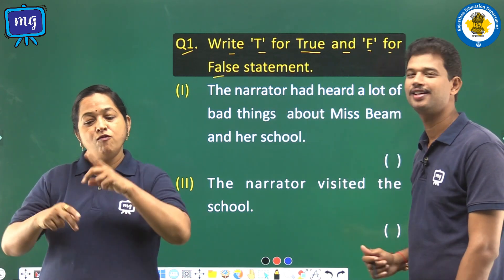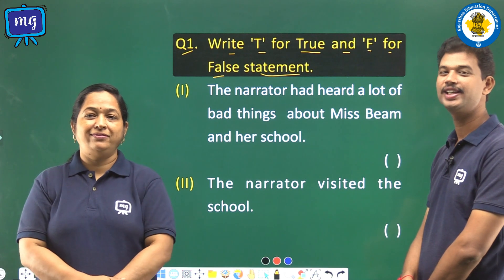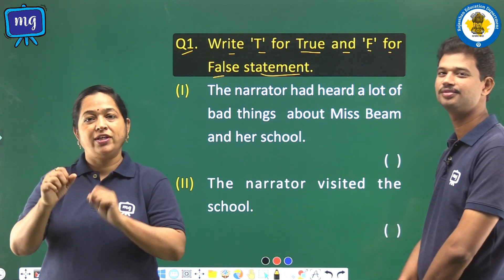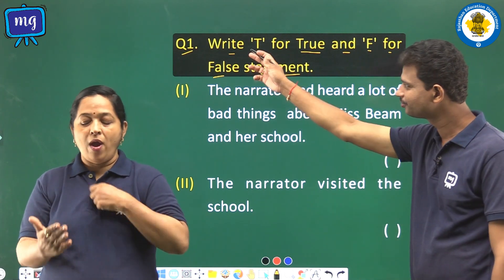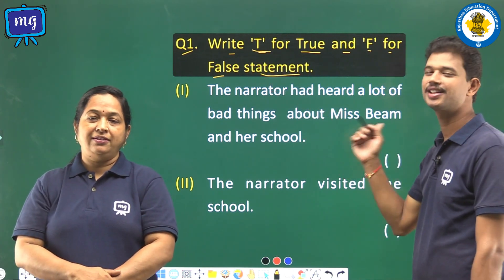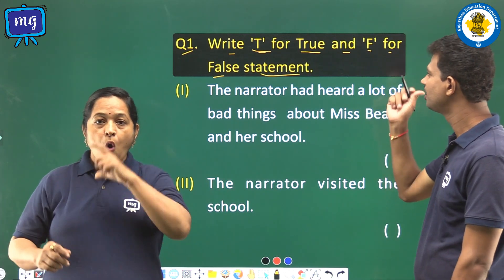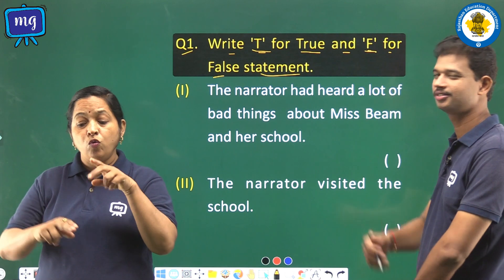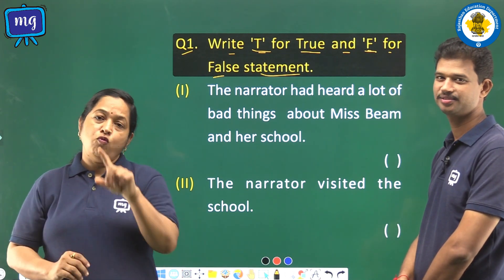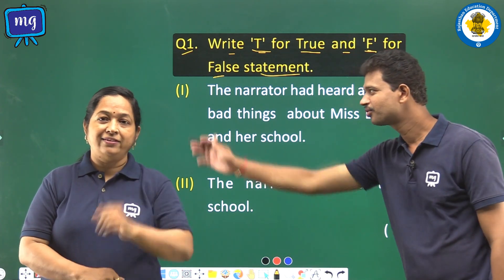First, Question 1: write T for true and F for false statements. It means in this question you will have to write T if the sentence is correct, or you will write F for a wrong sentence.